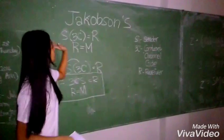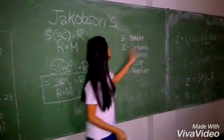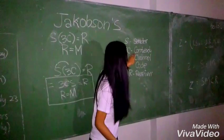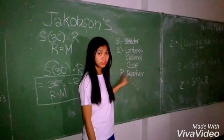This equation is an example of Jakobson's model. First, let S be the sender, the 3C be the context, channel, and code, and lastly, R for the receiver.